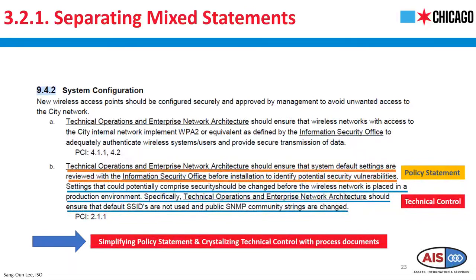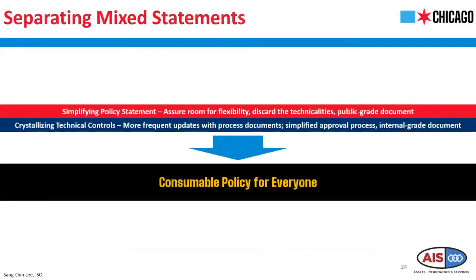By doing so, we are simplifying the policy statements and making them a stronger message, while also crystallizing the technical controls within process documents. This process not only lifts the burden on the reader, but also allows us to make more dynamic updates. For the process document, we only need single or double signatures from the CISO and CIO. But for the policy to be revised, we have to go all the way through the Mayor's Office, which requires several weeks or months in a good case. That's why we are separating these two — to create a more readable, consumable, living document that can accommodate rapid updates.